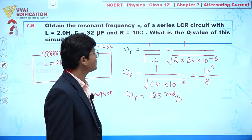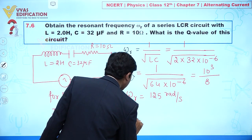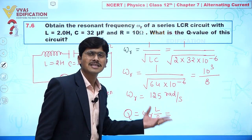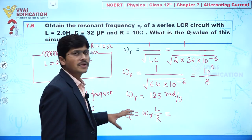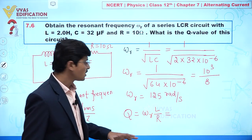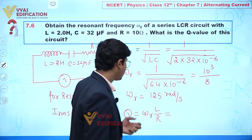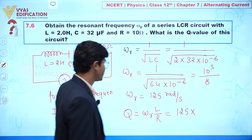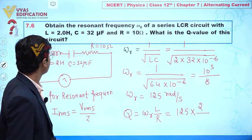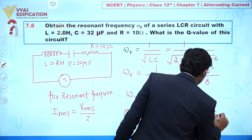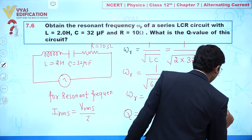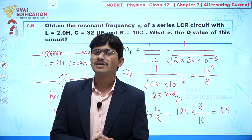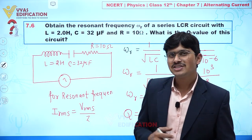The next objective is to calculate the Q value. Q value is given by the formula omega r times L divided by R. You can find the derivation of this expression in NCERT or any reference. So Q equals omega r times L over R: that is 125 multiplied by 2, divided by 10. This gives 250 divided by 10, which equals 25.